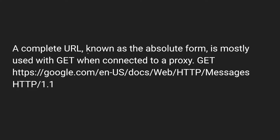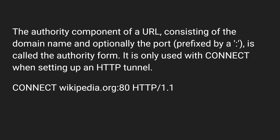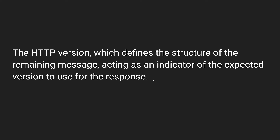A complete URL known as the absolute form is mostly used with GET requests when connected to a proxy — for example, 'GET http://google.com'. The authority component of a URL, consisting of the domain name and optionally the port, is normally used with the CONNECT method.